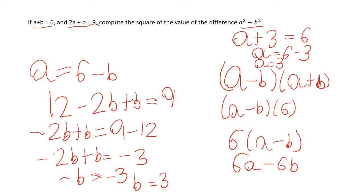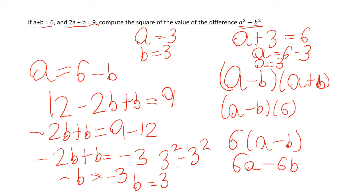We're asked to compute the square of the value of the difference a squared minus b squared. We know a equals 3 and b equals 3, so we compute: 3 squared minus 3 squared equals 9 minus 9, which equals 0. And 0 squared is 0.